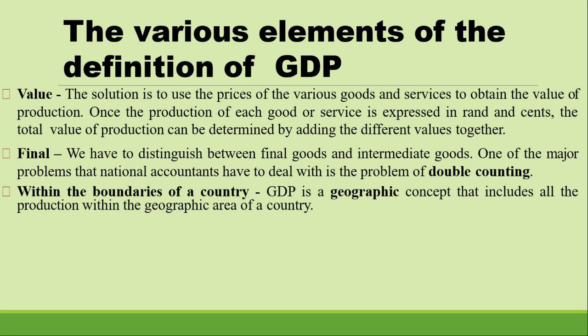Another element is within the boundary of a country. GDP is the measure of total value of goods and services within the boundary of the country. GDP is a geographic concept that includes all the production within the geographic area of the country — within the borders of the country. We do not look across borders.